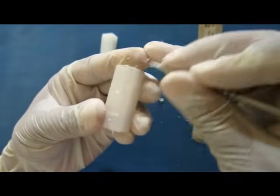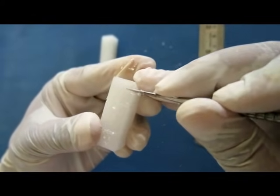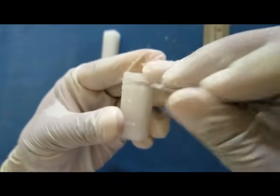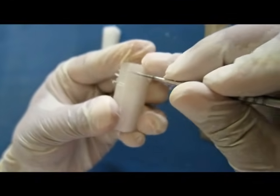When we come to the crown, it can be divided into three parts: incisal or occlusal third, middle third, and cervical third. Again, this can be extended on all surfaces.